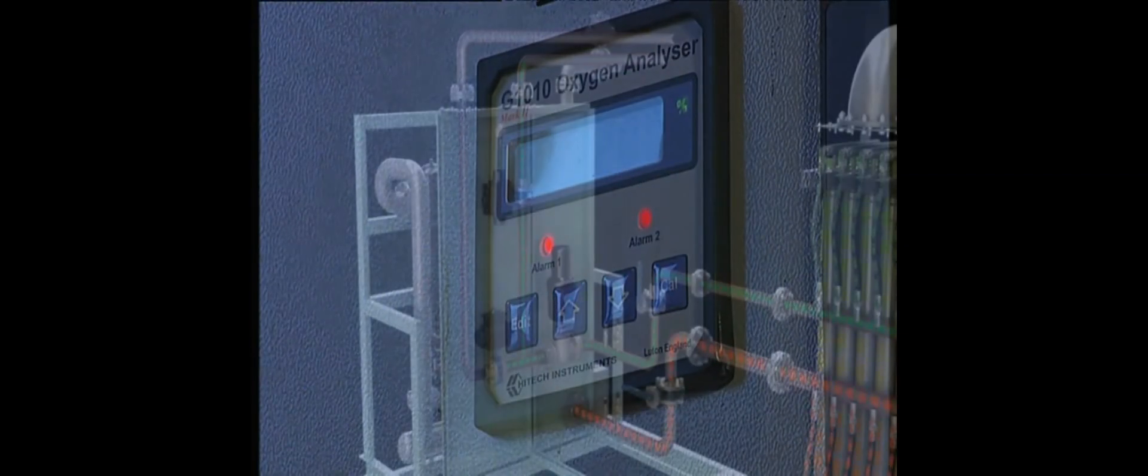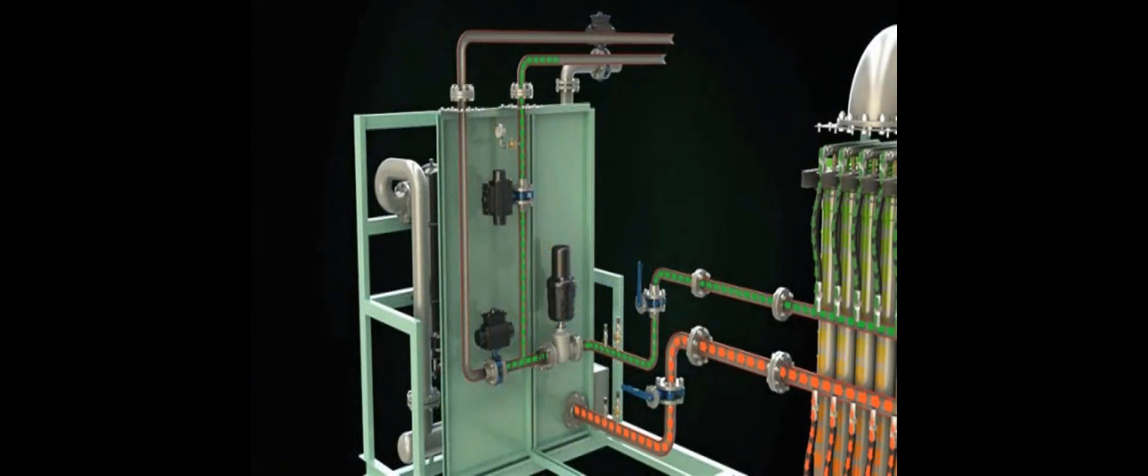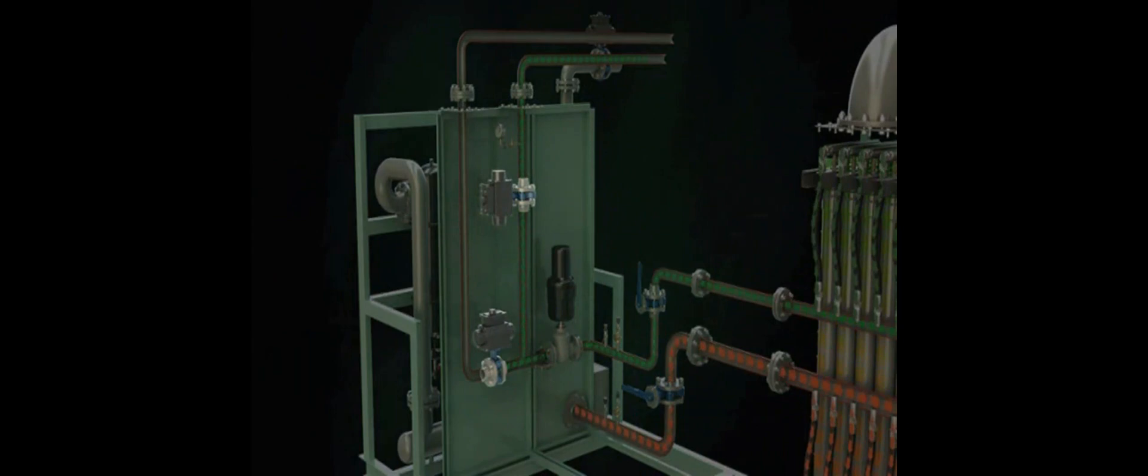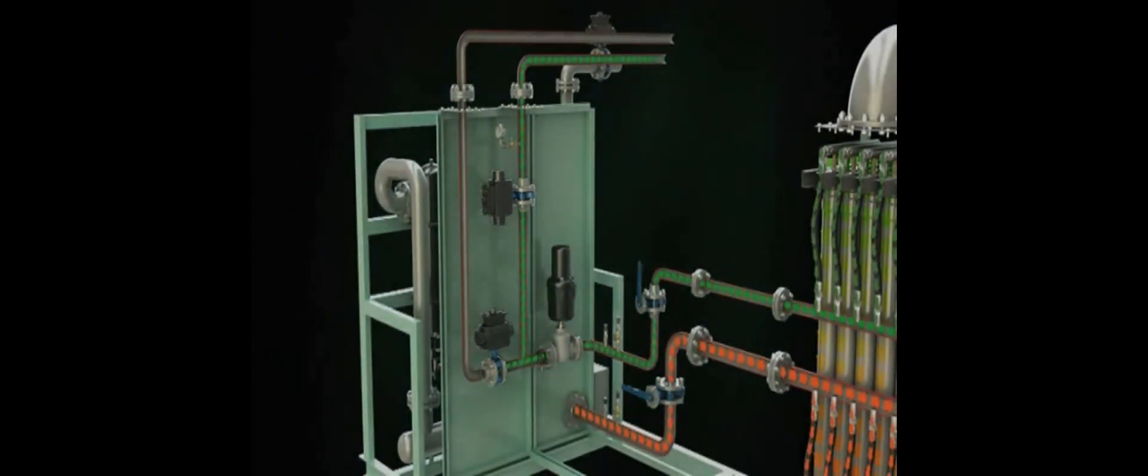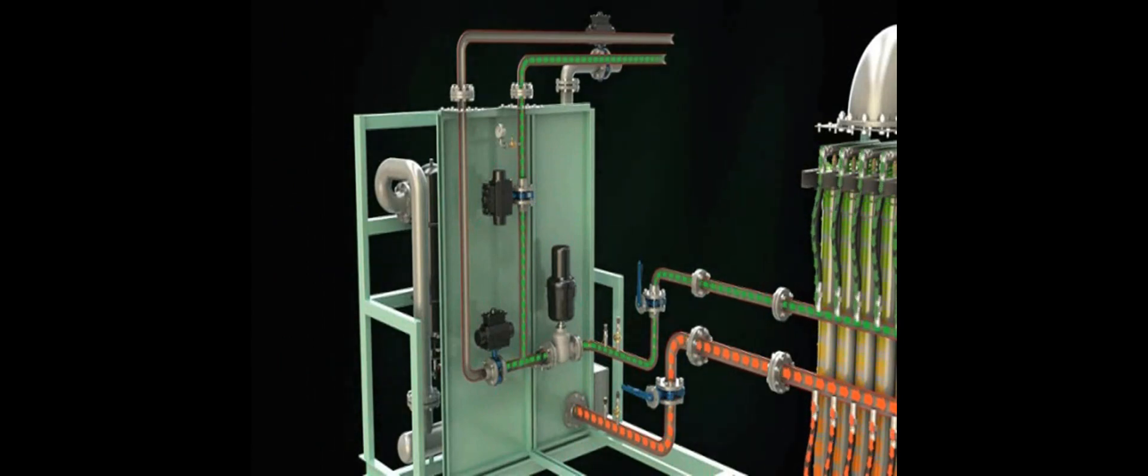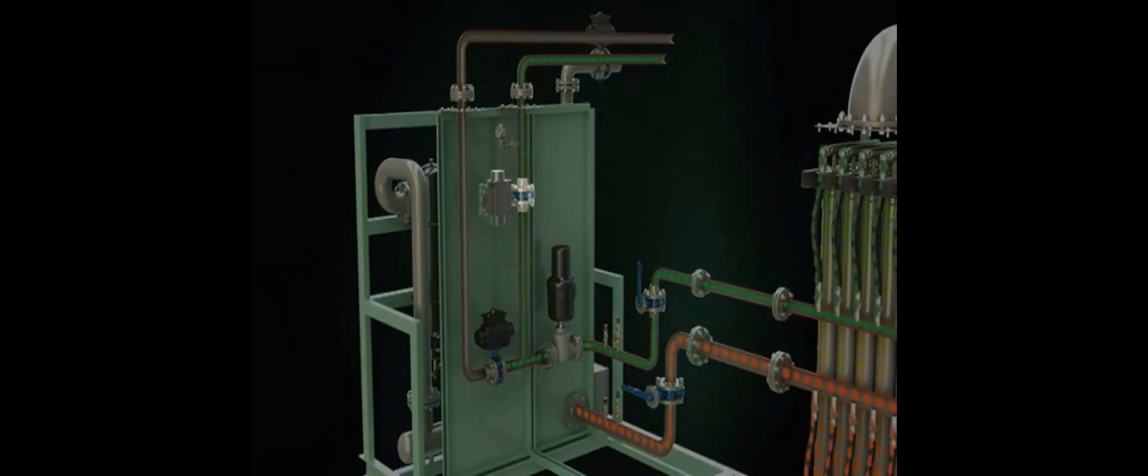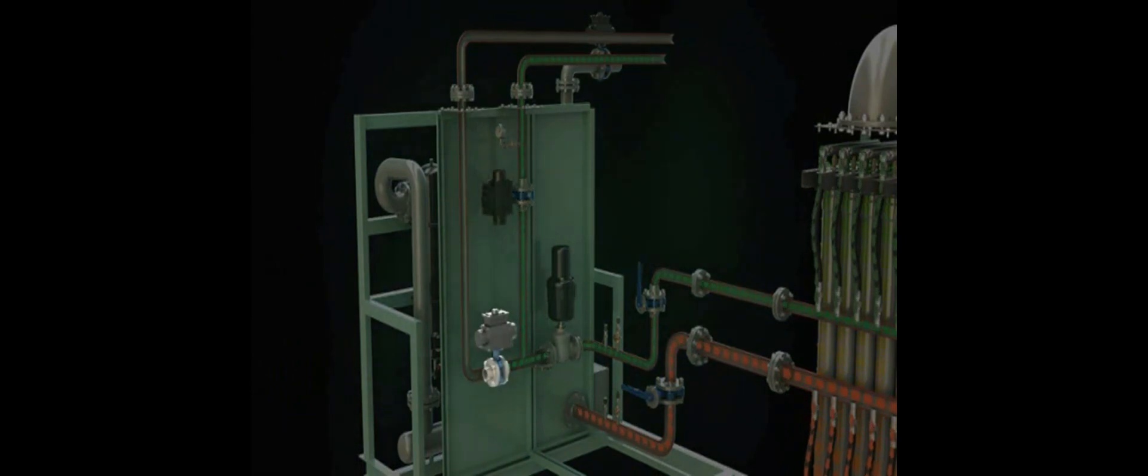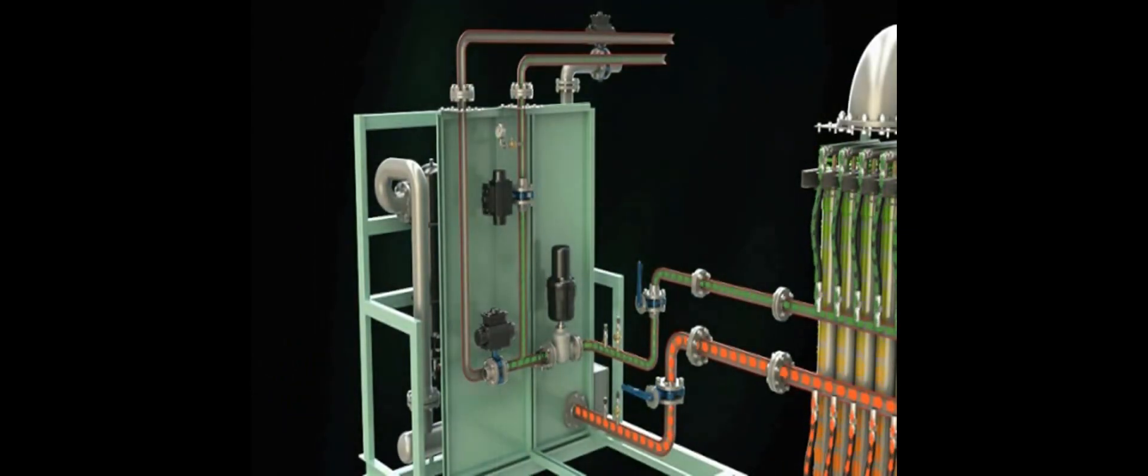An oxygen analyzer will display the level of oxygen in the nitrogen product gas produced by the membranes. The analyzer will send signals to the delivery and vent actuator-operated valves in order to prevent off-specification nitrogen from being delivered to the consumer. When the oxygen content is on specification, the dump valve will close and the delivery valve will open. The system will now be in normal operation and deliver nitrogen on specification to the consumers.